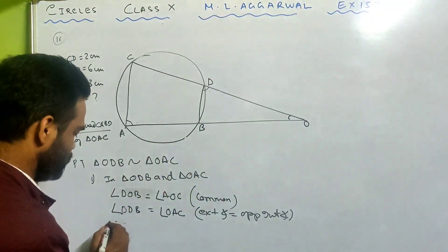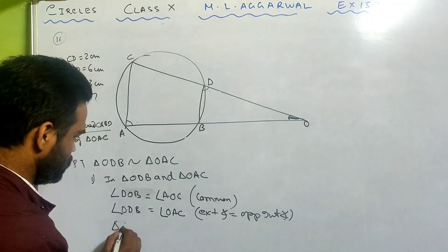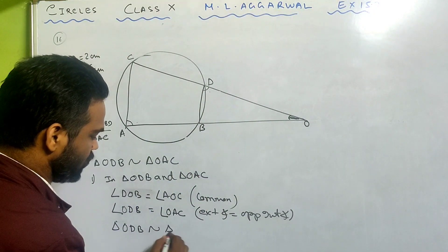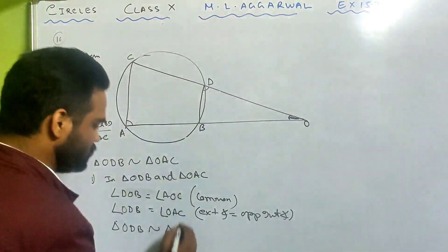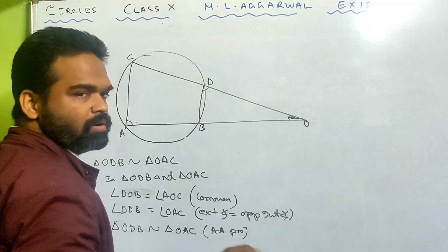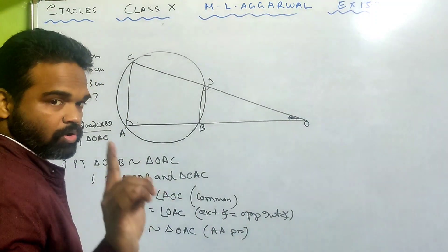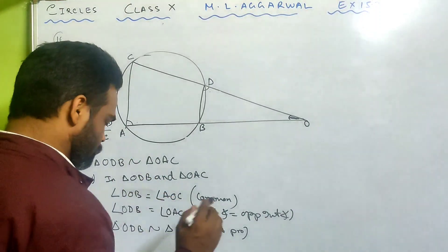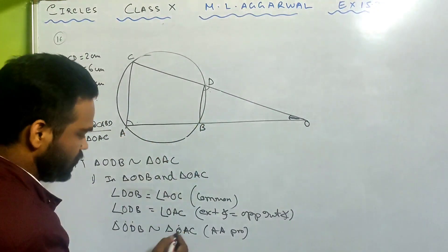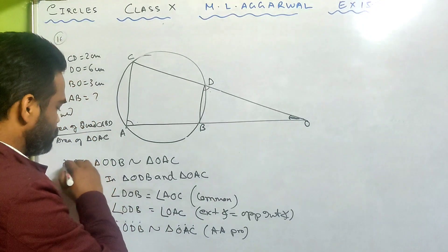Now 2 angles are same, which means triangle ODB is similar to triangle OAC by the angle-angle property. If two angles are equal, then the two triangles are similar. Be careful — the corresponding angles should be at their respective place, which means O corresponds to O, D corresponds to A, and B corresponds to C. So the first part is done.